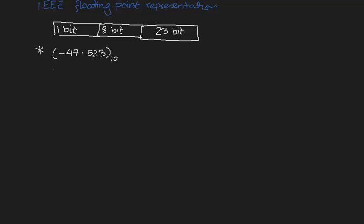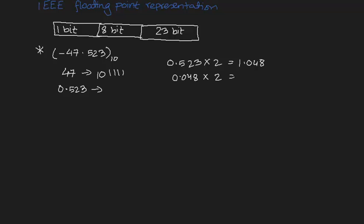We'll be converting this negative decimal value into IEEE floating point representation. First, we convert 47 to its binary representation — you can use a calculator. So 47 is 101111 in binary. For 0.523, it has to be converted manually. If you multiply 0.523 by 2 you get 1.048, then 0.048 by 2 gives 0.096, and so on.